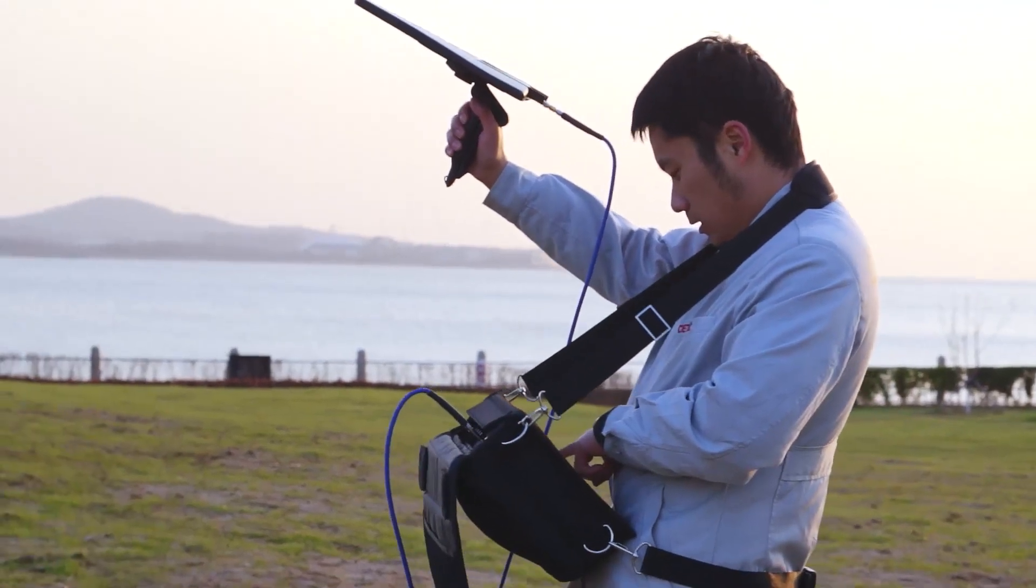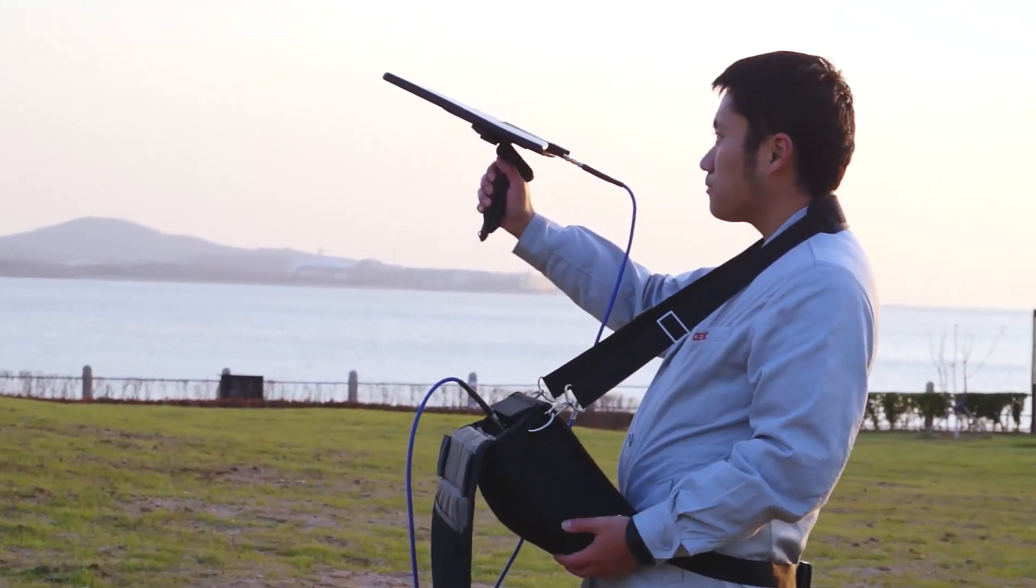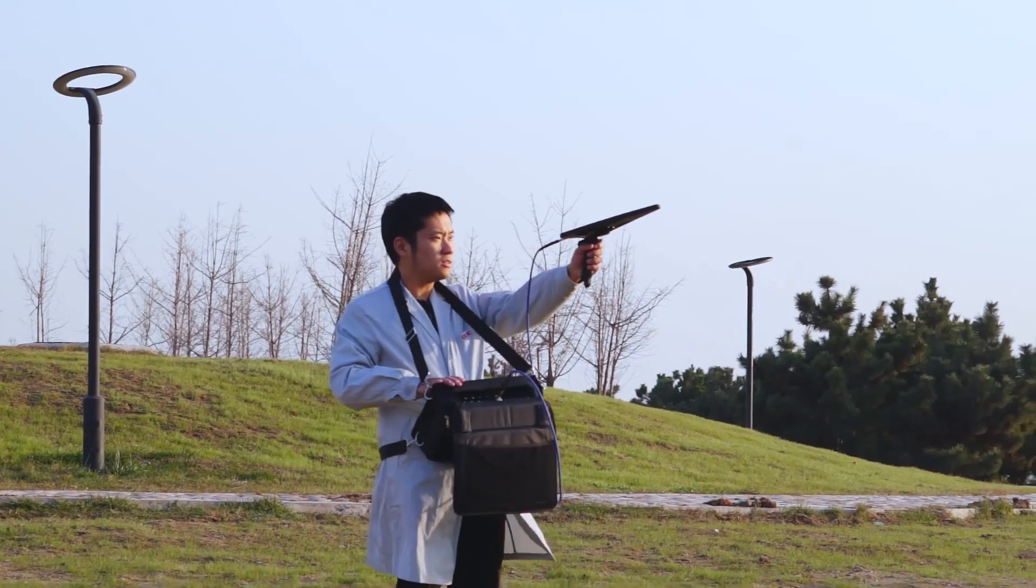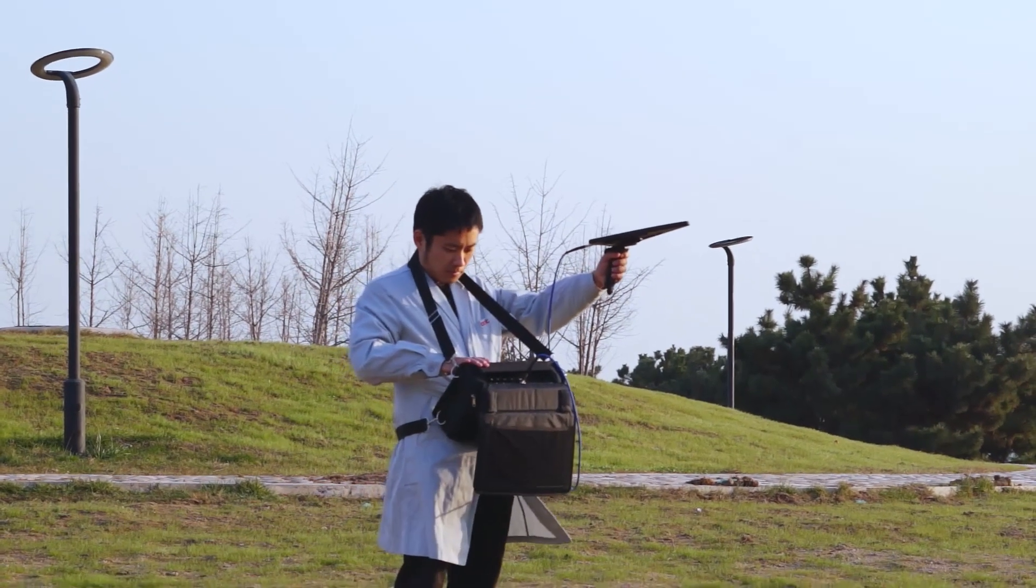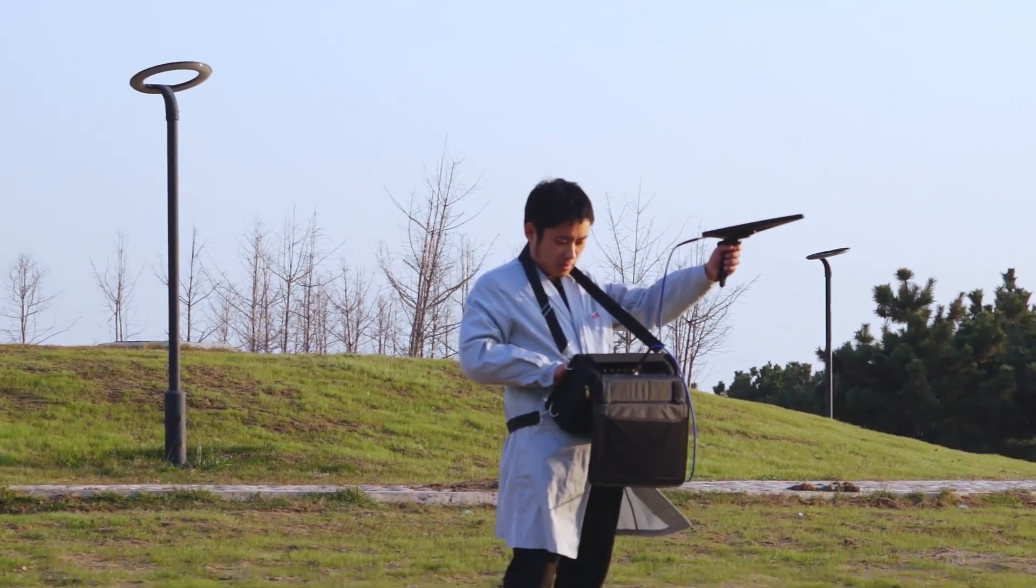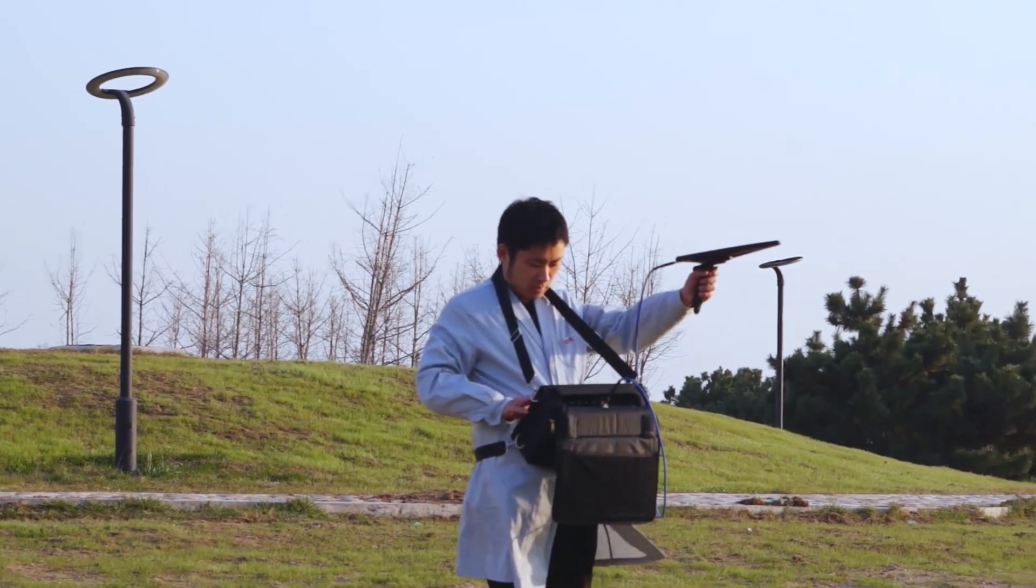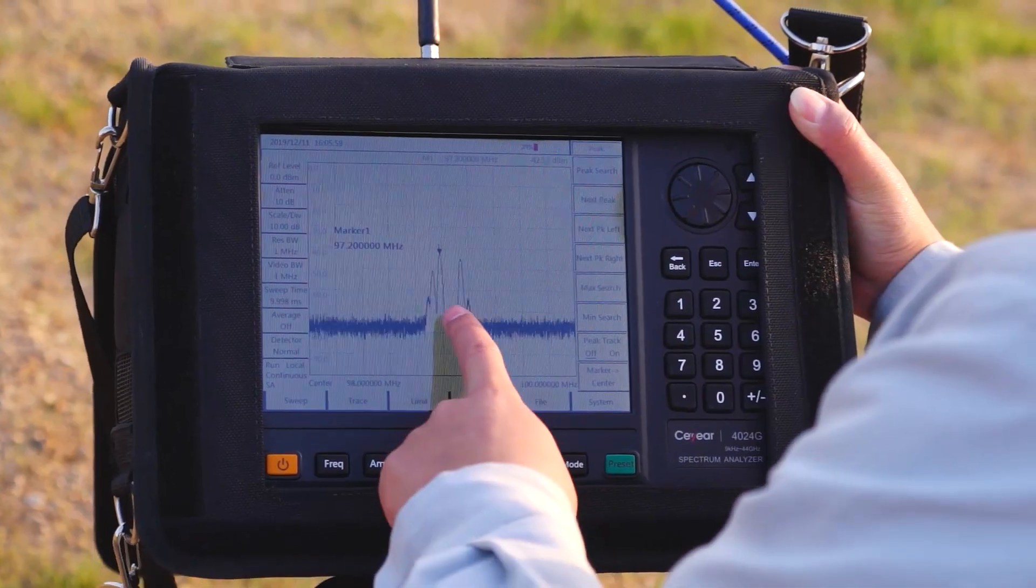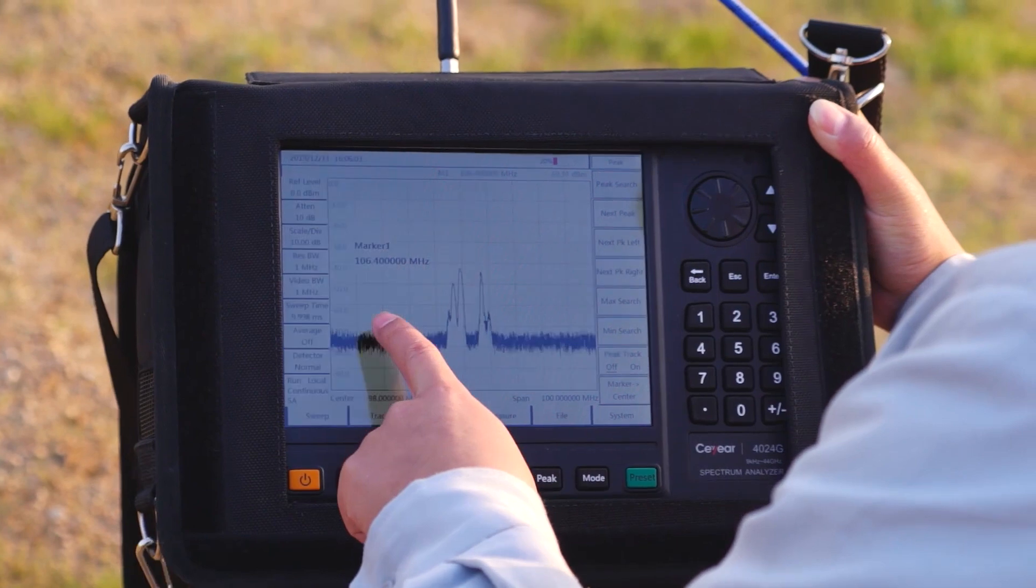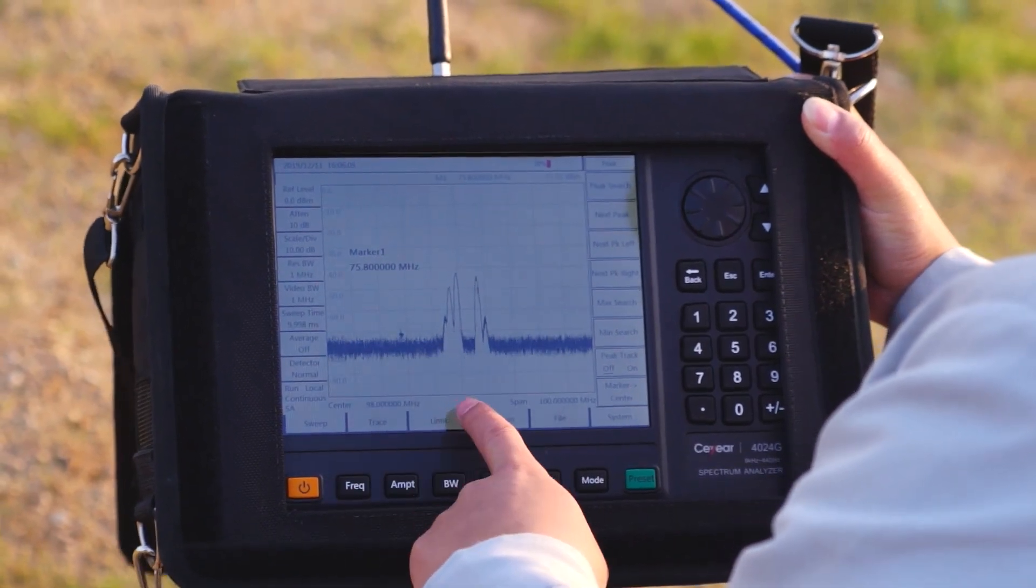C-Year 4024 has low dimensions, small weight, and is easy to operate. Users can put this machine into a backpack and free their hands. Electronic compass and antenna are optional for radiation source orientation and field strength measurement. All operation processes can be performed by a single person. This makes 4024 a great choice for site testing.